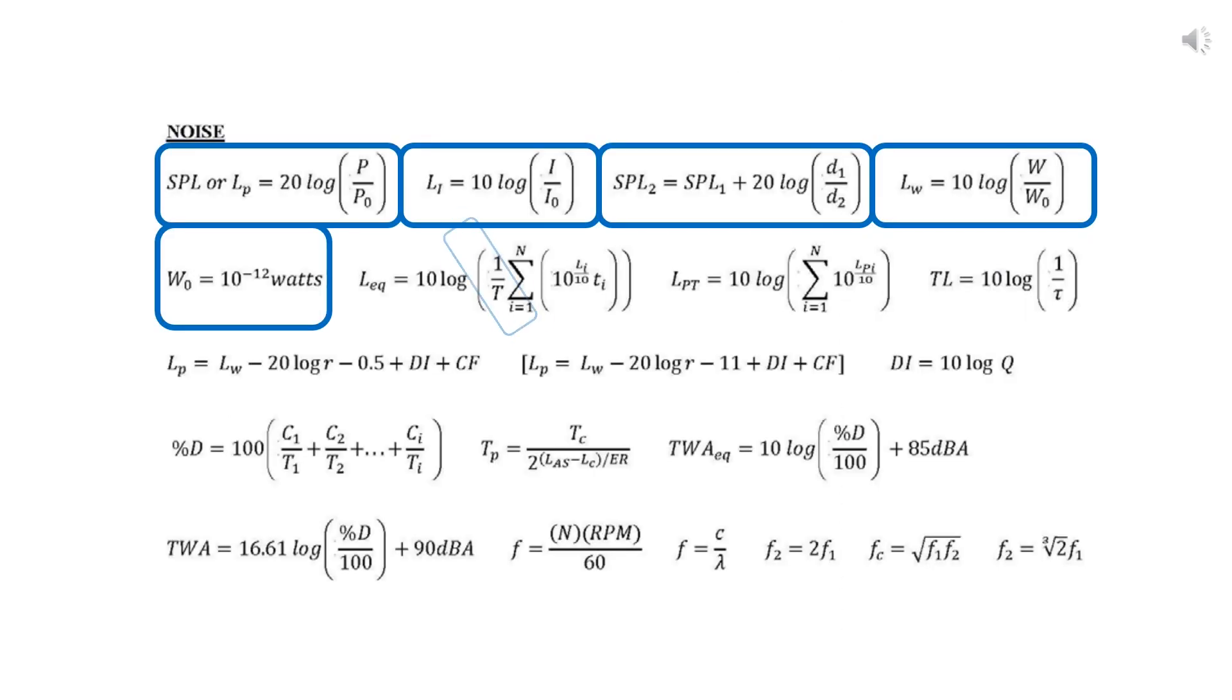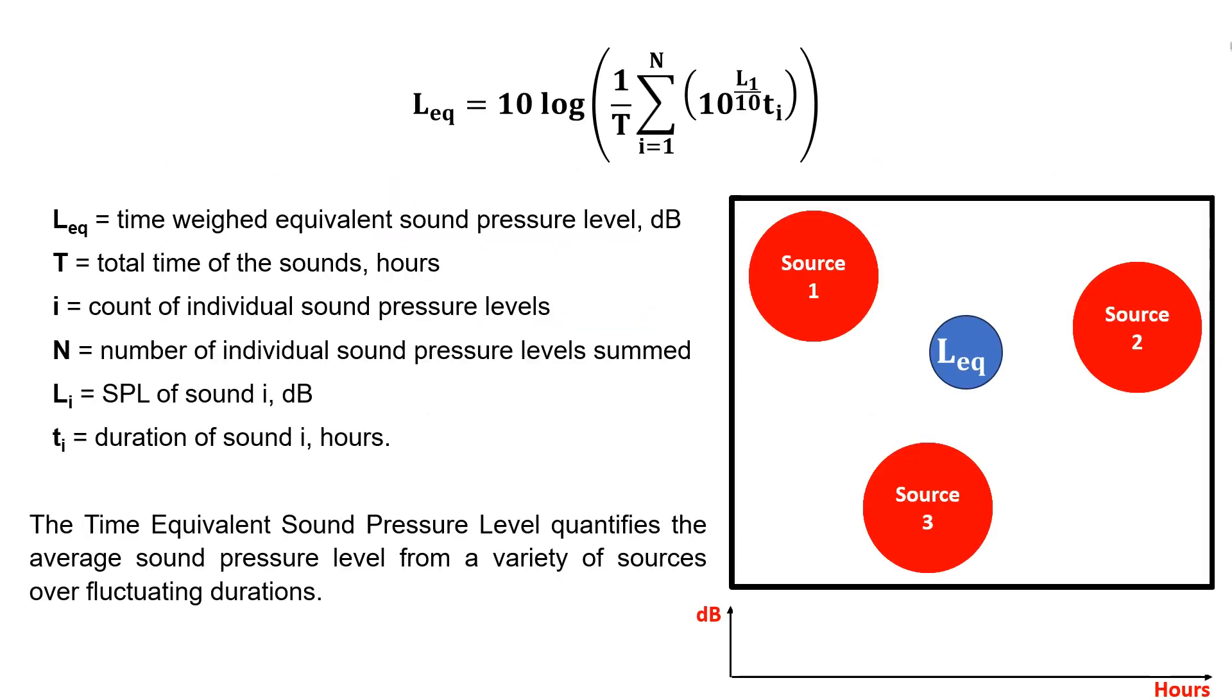Now let's go to equation number 6. This is the time equivalent sound pressure level, which quantifies the average sound pressure level from a variety of sources over fluctuating durations. Time equivalent sound pressure level is often used in environmental noise assessments, workplace noise evaluations and other applications where it is important to characterize the average or equivalent sound level experienced over a certain time period.